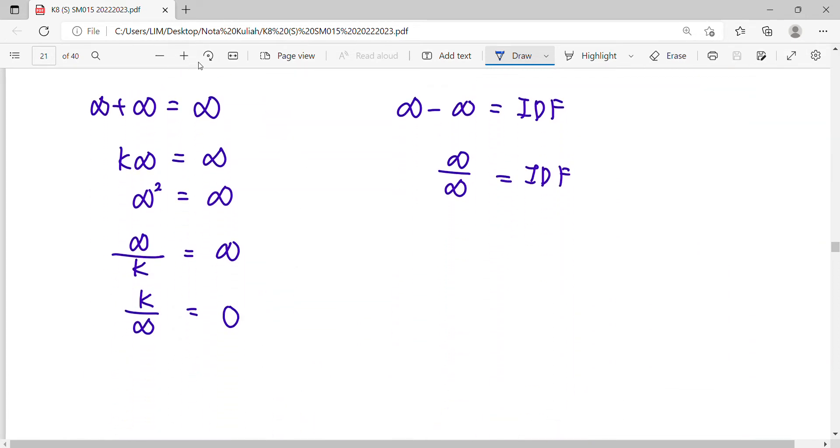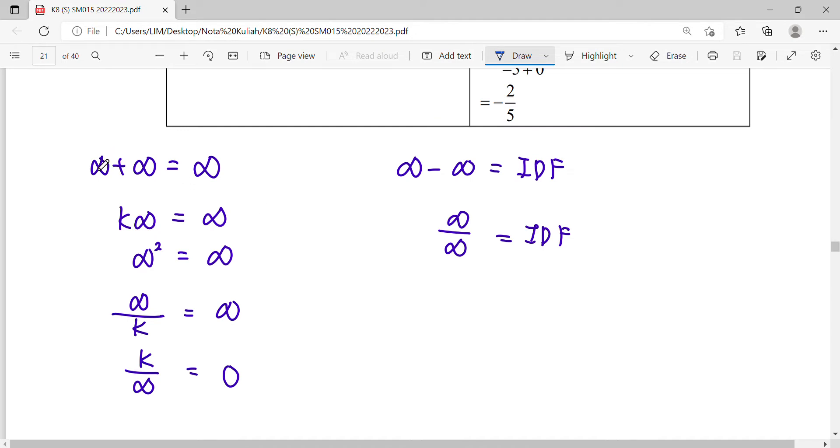When we have infinity plus infinity, the result is infinity. If we subtract, infinity minus infinity, we get IDF (indeterminate form). Big numbers minus big numbers - we cannot define anything, whether the result is infinity or zero.